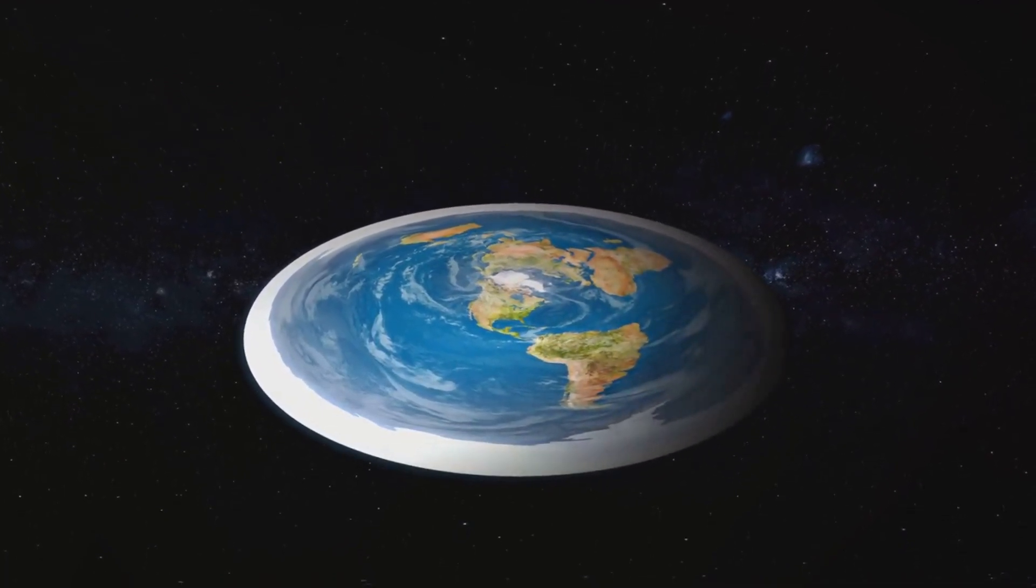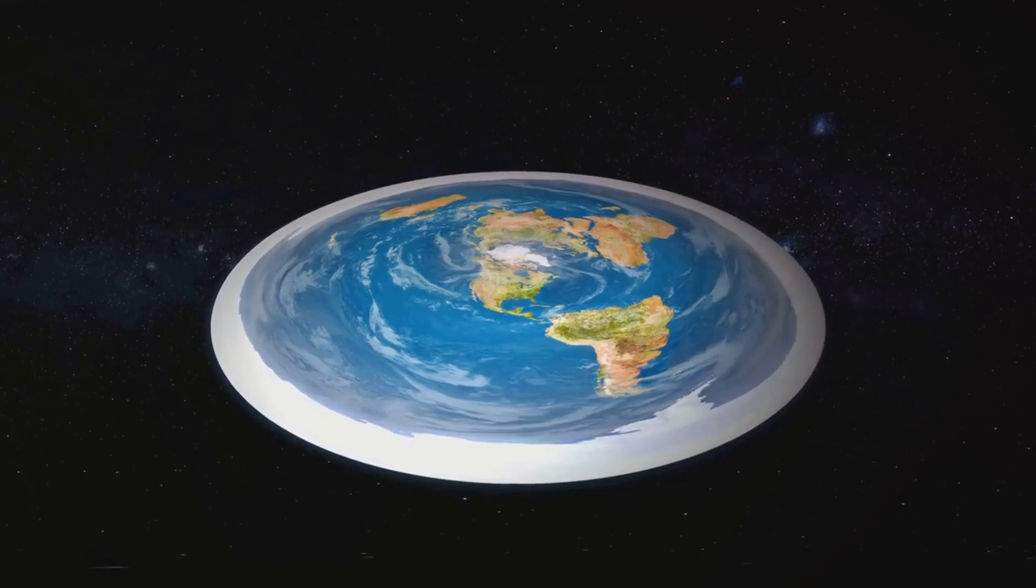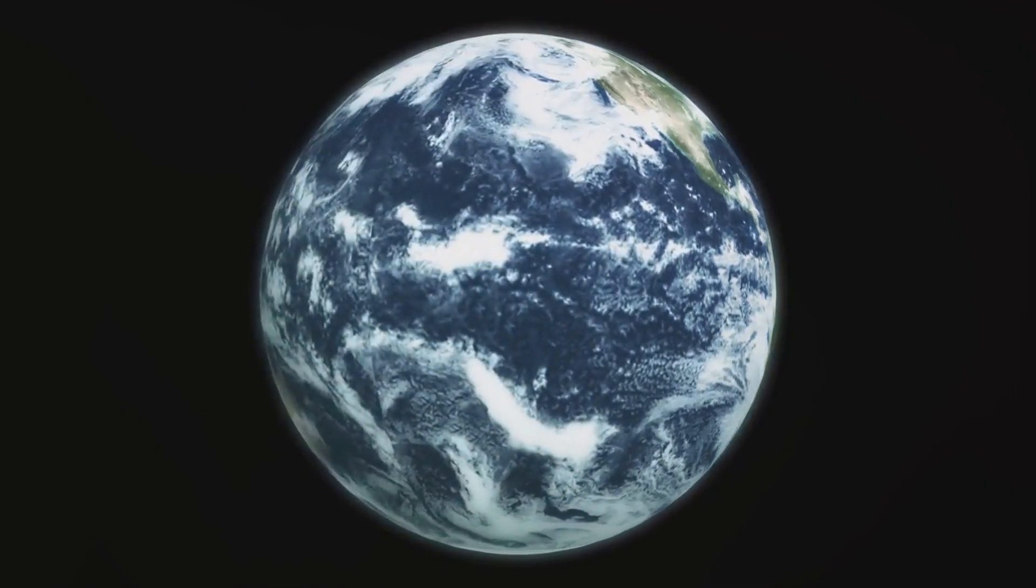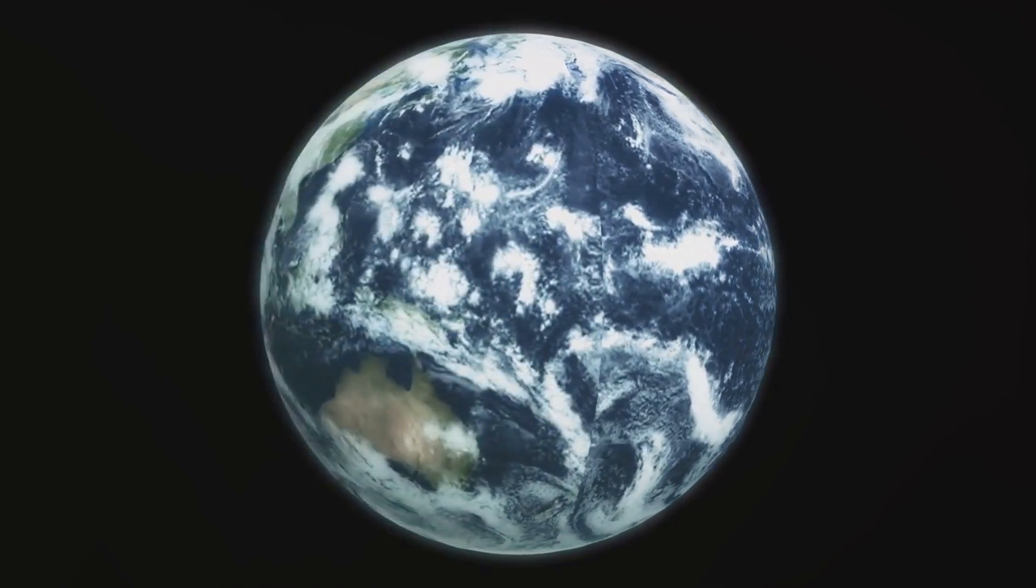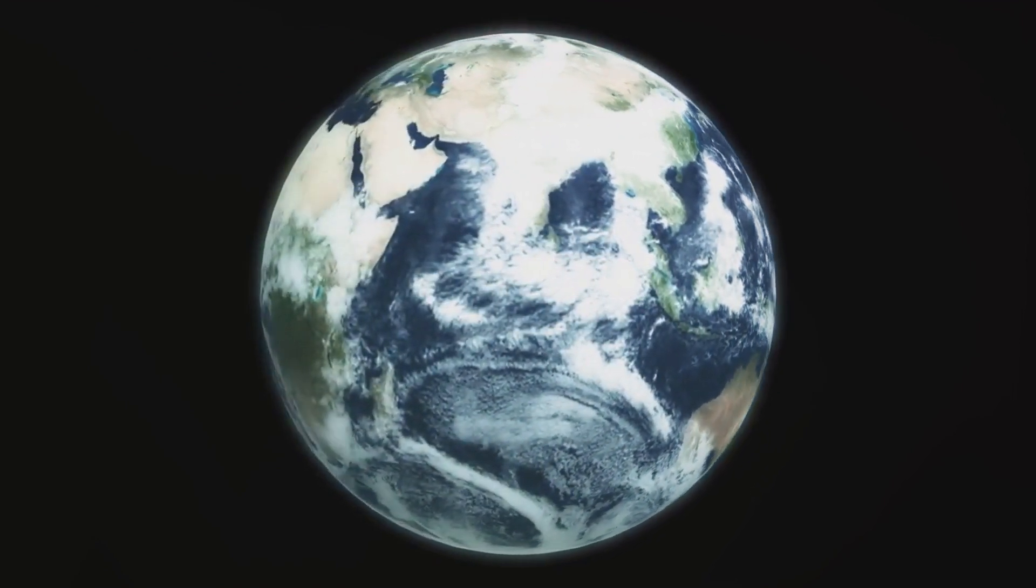The reality is, the scientific consensus on the Earth's shape isn't a matter of opinion. It's based on centuries of empirical evidence and rigorous testing. From the ancient Greeks' observations of lunar eclipses to modern satellite imagery and space travel, the evidence overwhelmingly supports a spherical Earth.